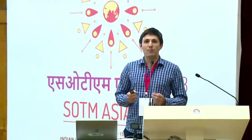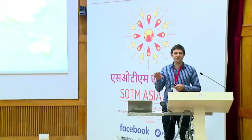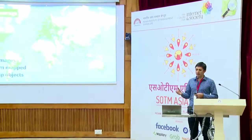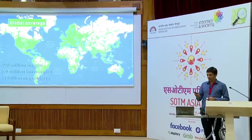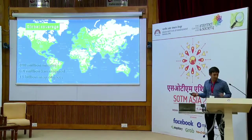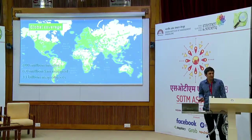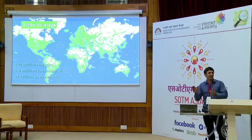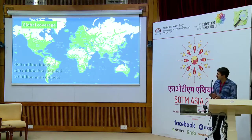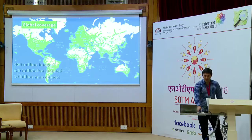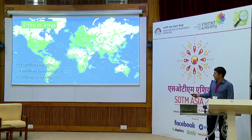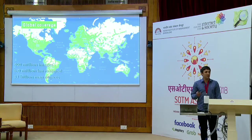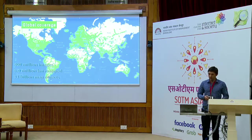What is Mapillary for those that maybe don't know? We are a platform for street-level imagery, but more importantly it's about how that street-level imagery can be used to create map data. I'm happy to say we just passed 400 billion images — that actually happened in the last 48 hours. So a round of applause to everyone who's been contributing. That means 6 million kilometers and, most importantly, 33 billion map objects that have been detected in images around the world.